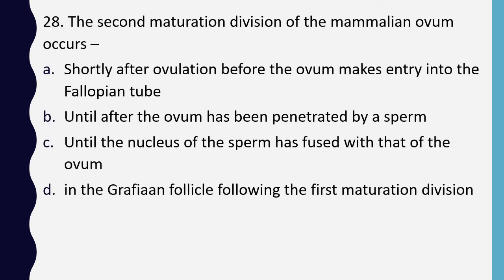Question 28. The second maturation division of the mammalian ovum occurs: shortly after ovulation before the ovum makes entry into the fallopian tube; until after the ovum has been penetrated by a sperm; until the nucleus of the sperm has fused with that of the ovum; or in the follicle following the first maturation division. Correct answer is option B: until after the ovum has been penetrated by a sperm.